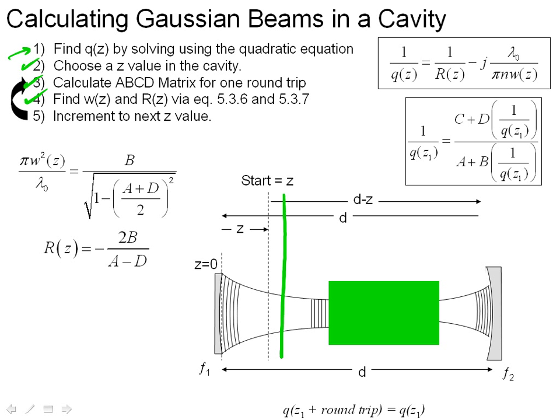But essentially what it's going to give you is the waist and the radius of curvature at every point Z you calculate in the cavity.